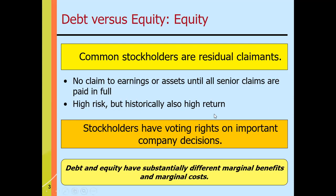Debt and equity have substantially different marginal benefits and marginal costs. They appear on different sections of the statement of financial position or balance sheet — one requiring payment of liabilities, the other involving dividend issuance to shareholders. Creditors for bonds payable are not part of the organization, whereas shareholders in the equity section are clearly part of the corporation.